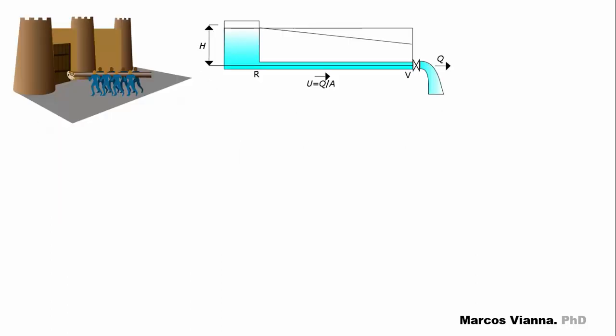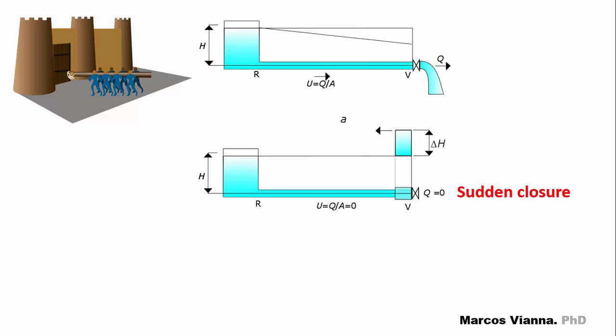Let's explain what happens here. This figure shows water flowing from a reservoir to a valve in the interior of a pipe. If you shut off the valve, the flowing water will stop its movement and be compressed against the closed valve. As a consequence, its density will increase as well as the pipe diameter.